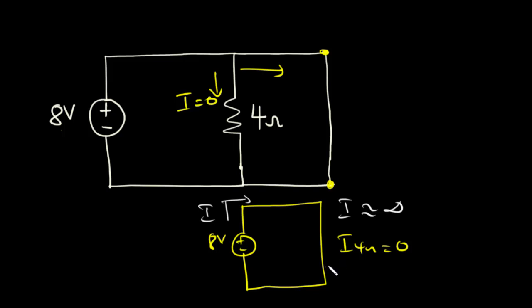Ideally, the total resistance for this circuit is supposed to be zero. However, we cannot have zero resistance in practice because the thin wire may have very little electrical resistance. So the total resistance for this particular circuit will be close to zero.